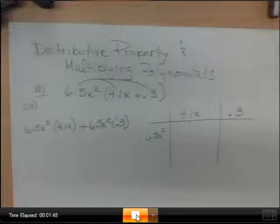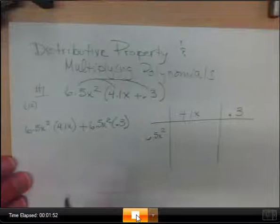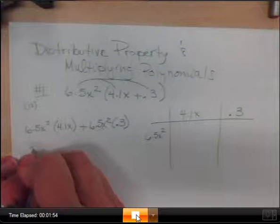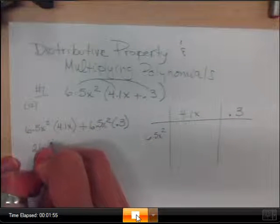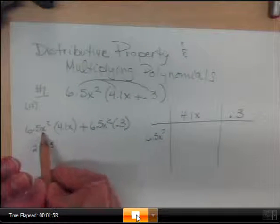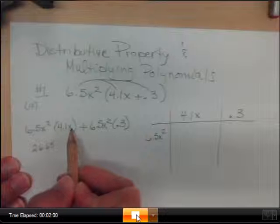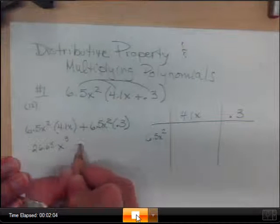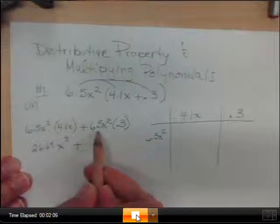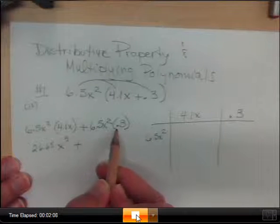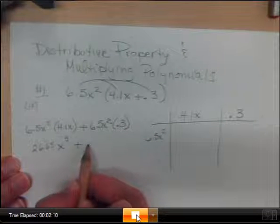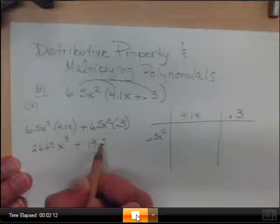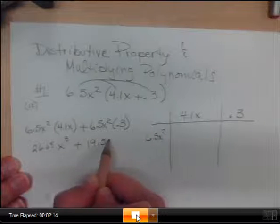So, somebody with a calculator. What's 6.5 times 4.1? I'm sorry, I didn't hear you. So we have 26.65. Now, if you have two x's and another x, how many x's do we have? So we would have x³ plus, now 6.5 times 0.3 gives you? 26.5. And how many x's do we have? We have x².